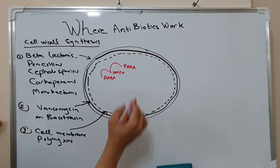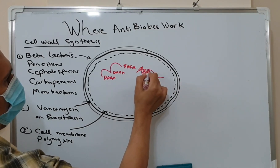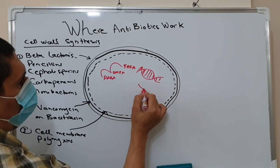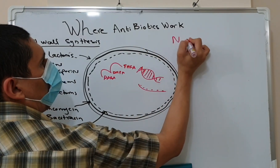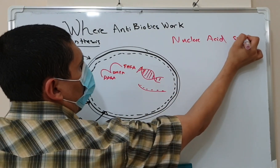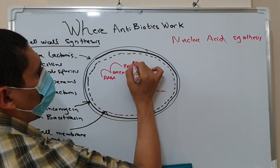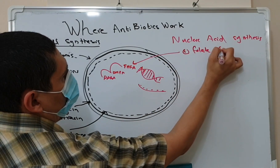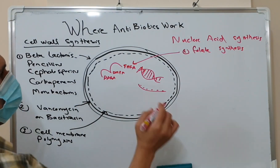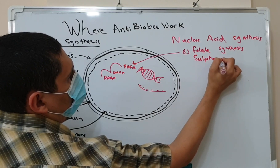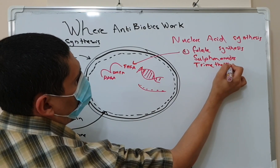work on the DNA enzyme gyrase, and some others that work on the RNA enzyme polymerase. For those antibiotics working on folate synthesis, we have two antibiotics used mainly for urinary tract infections and other infections: sulfonamides and trimethoprim. These two antibiotics work by inhibiting folate synthesis.